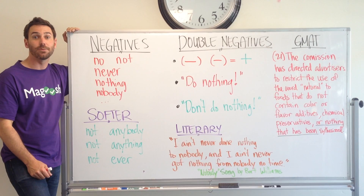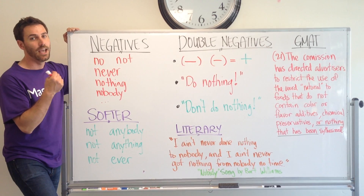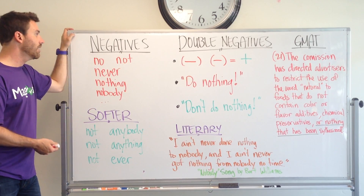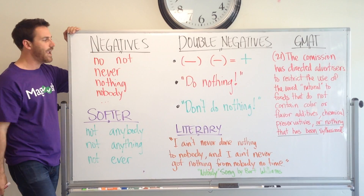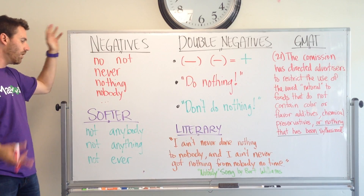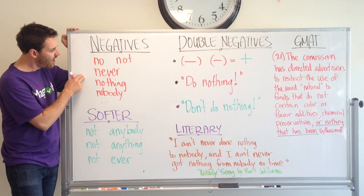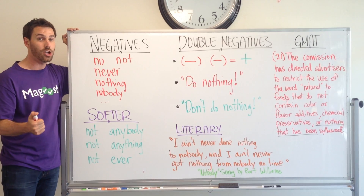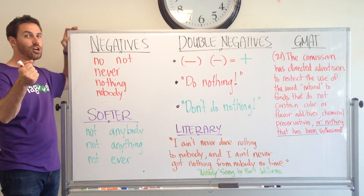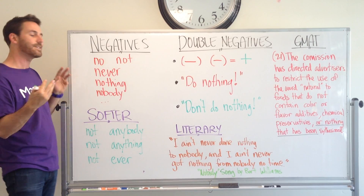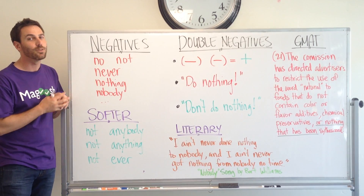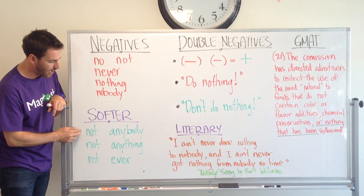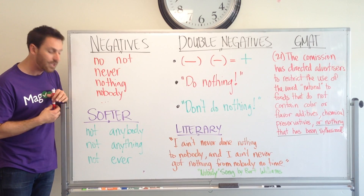In other languages, it can be a little different how negation works — sometimes you're negating verbs, or using a different verb ending to show negation. But in English, we just add the word 'no' or 'not' and things get negated. A couple of tips: to say 'never,' 'nothing,' and 'no one' is fairly emphatic — it's pretty extreme and very strong. But sometimes you want things to be a little softer, more gentle, and to do that you can use phrases like 'not anybody,' 'not anything,' or 'not ever.' That's going to soften your statements a little bit.